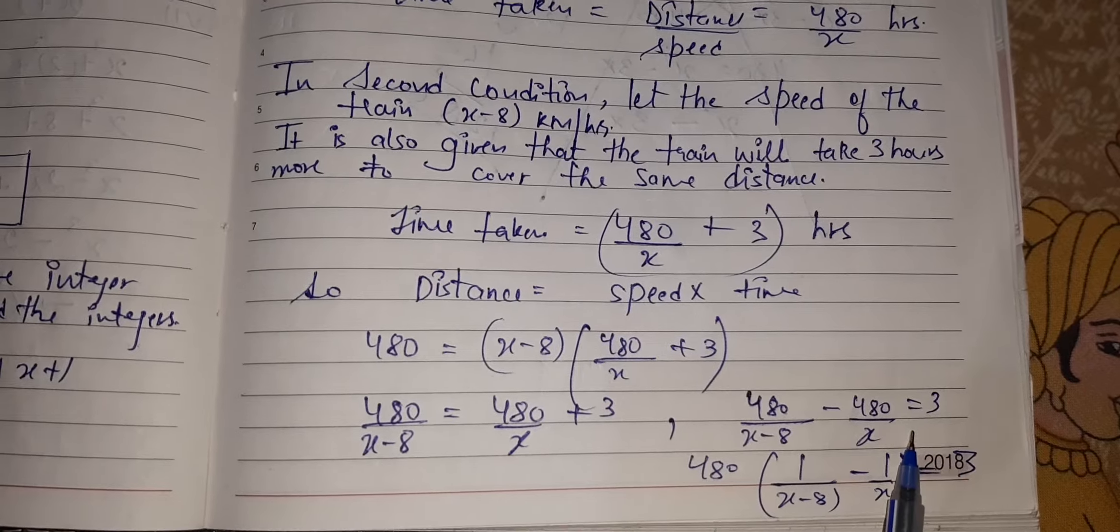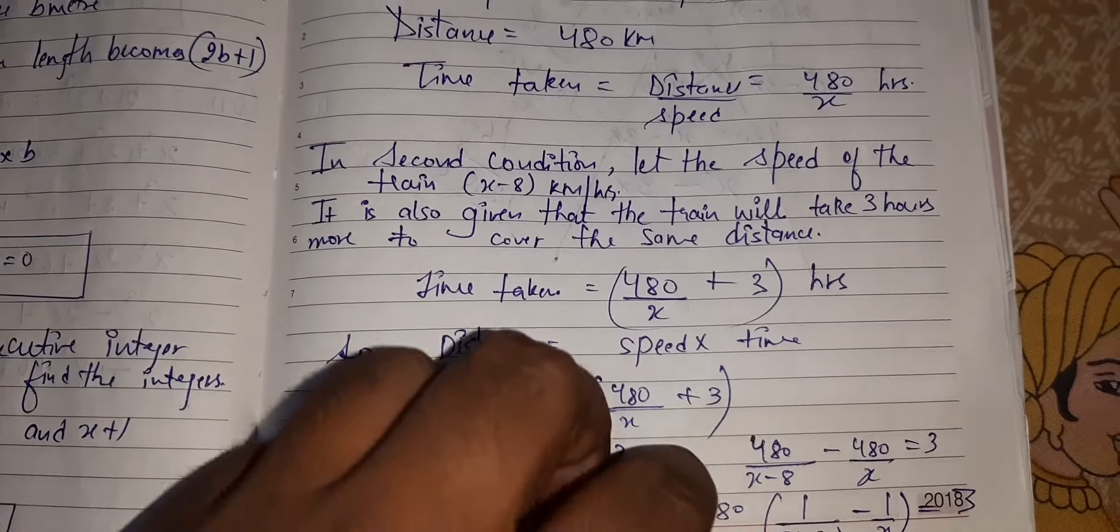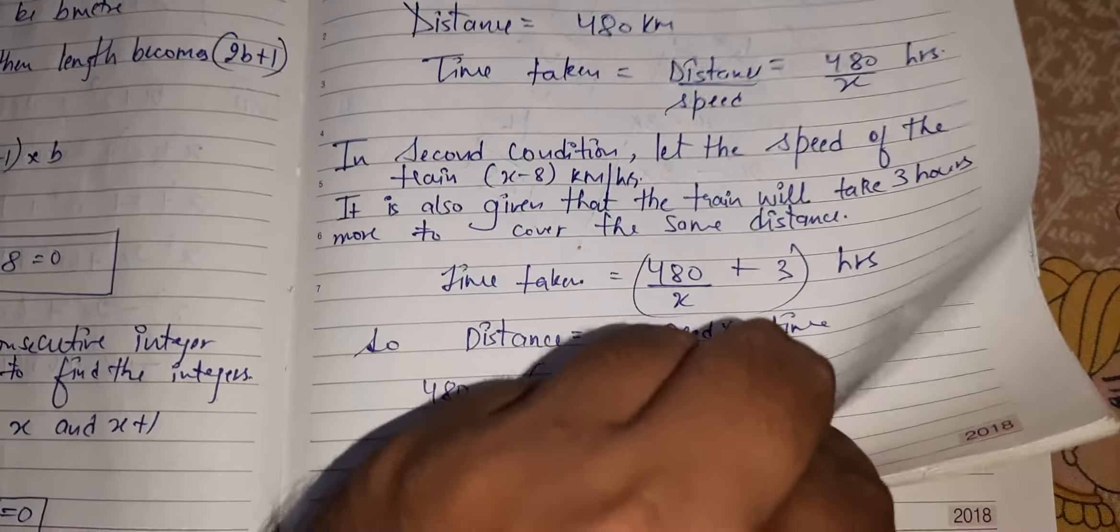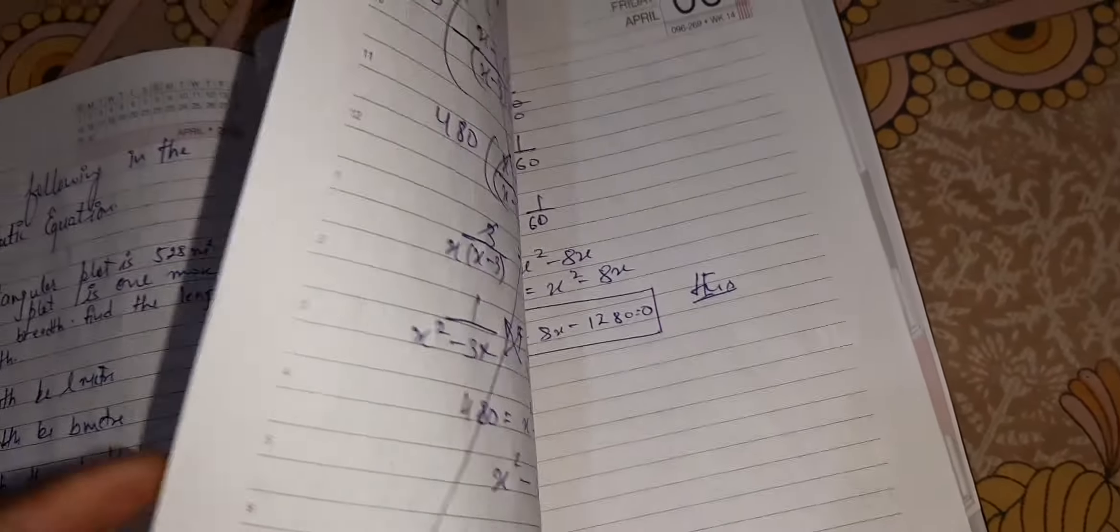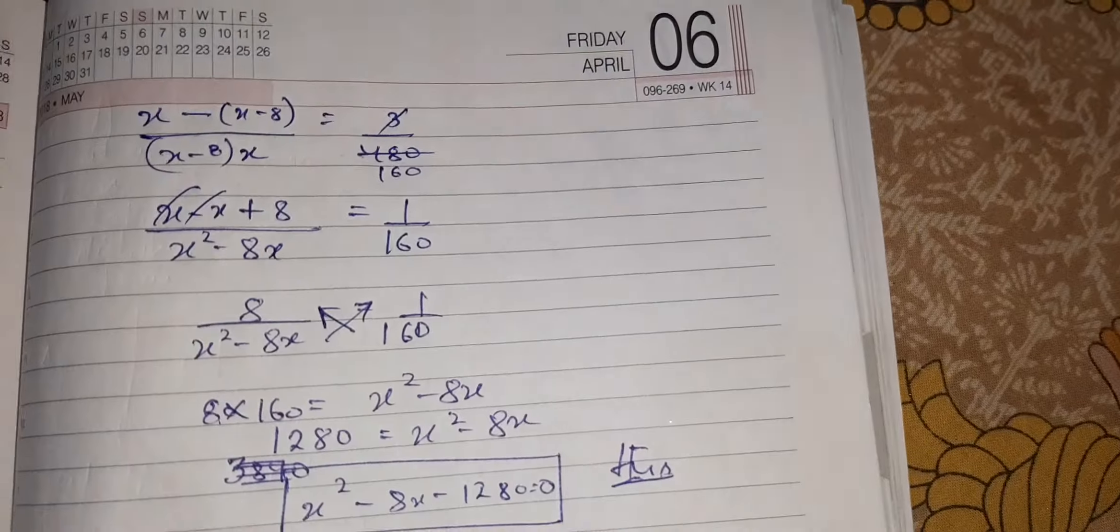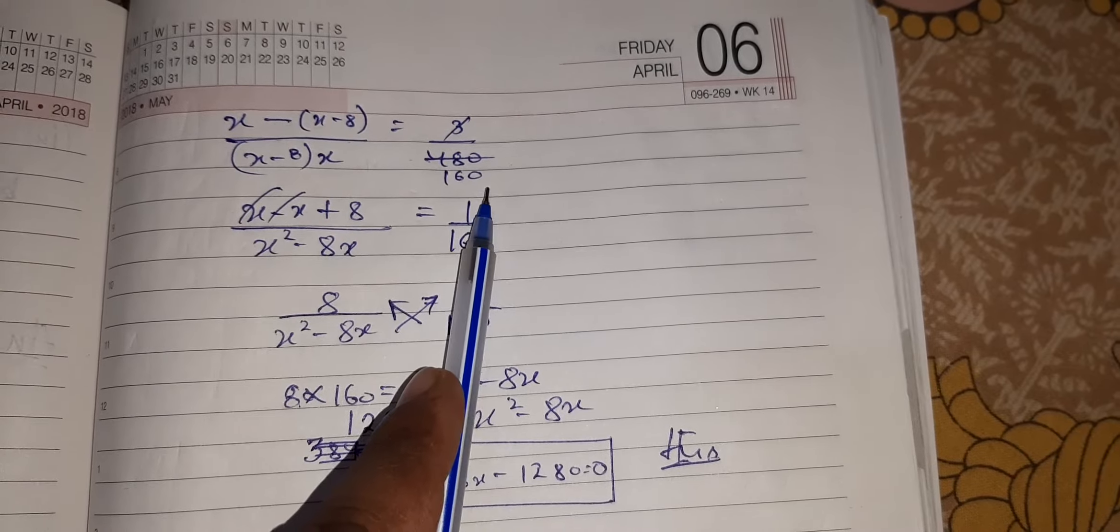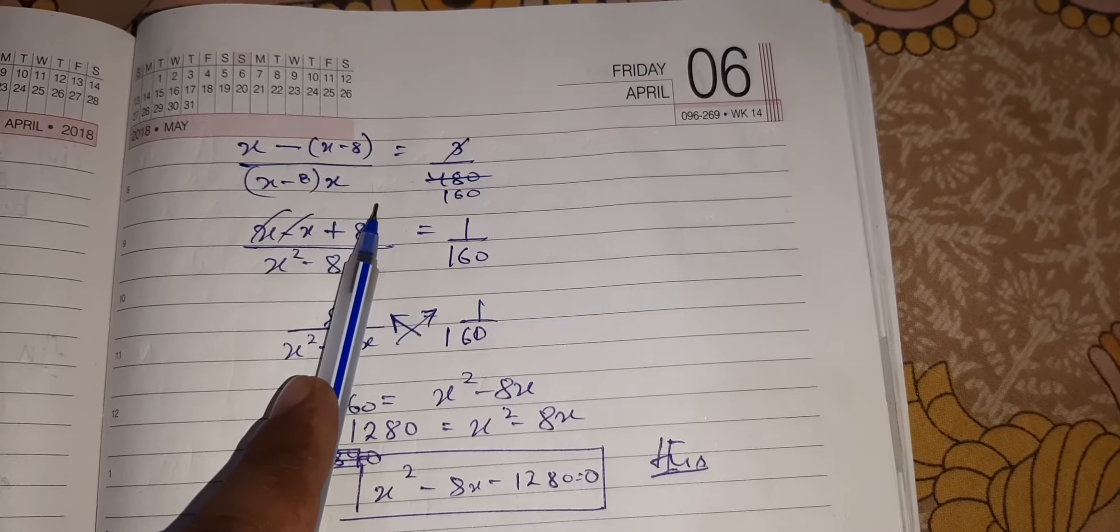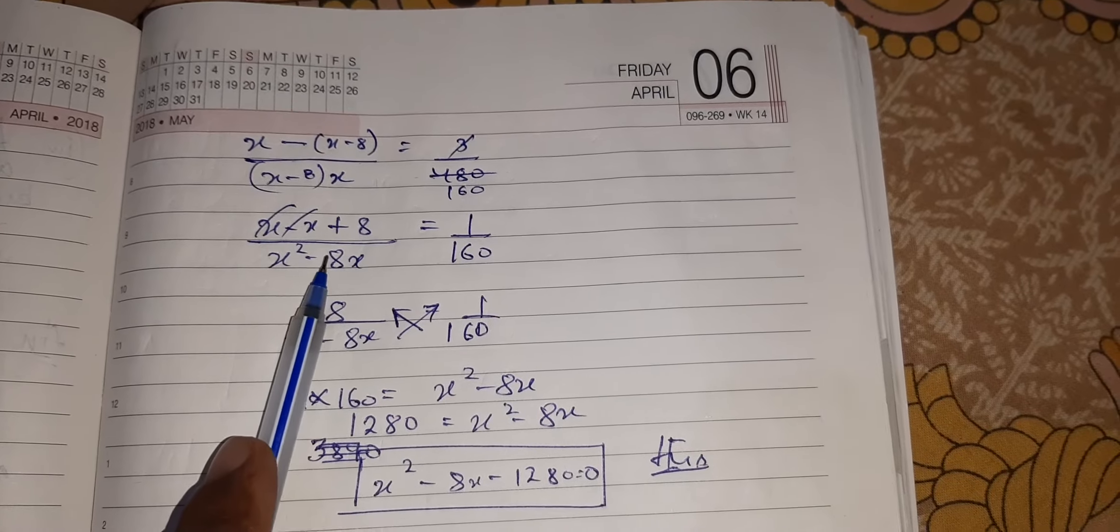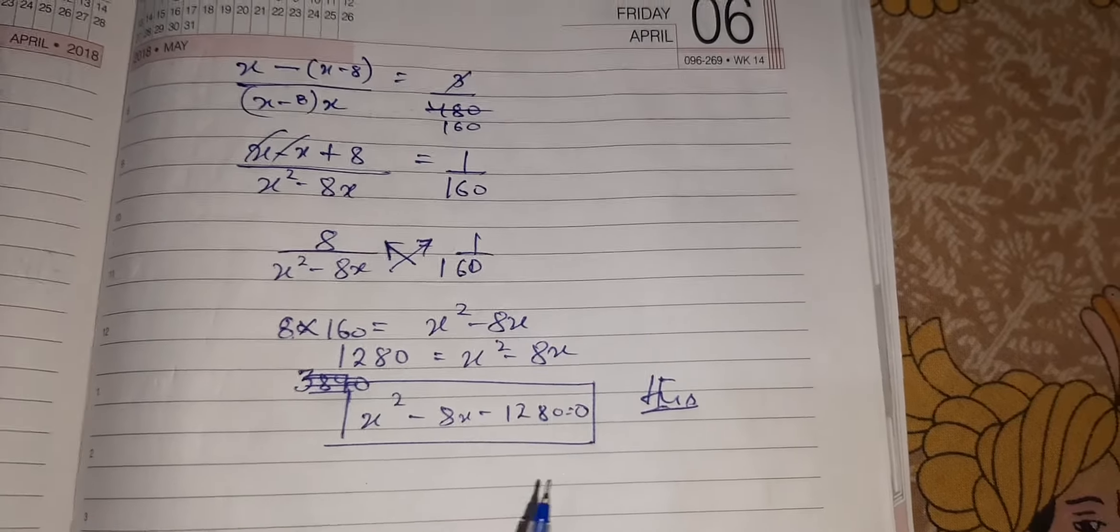It is equal to 3. I have taken 480 as common and bring that 480 in down of 3, in a down order of 3. By taking the LCM, I have got this. X get cancelled, plus 8 will be formed. Cross multiply and I have got the equation.